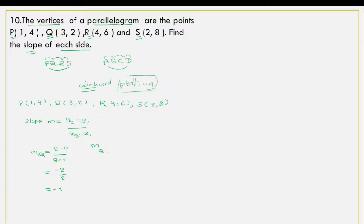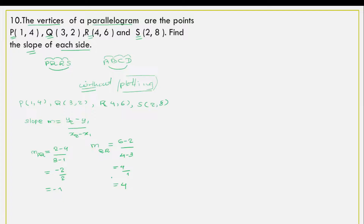Now we find the slope of QR. With Q and R: 6 minus 2 divided by 4 minus 3. That gives us 4 divided by 1, which equals 4. So MQR equals 4.